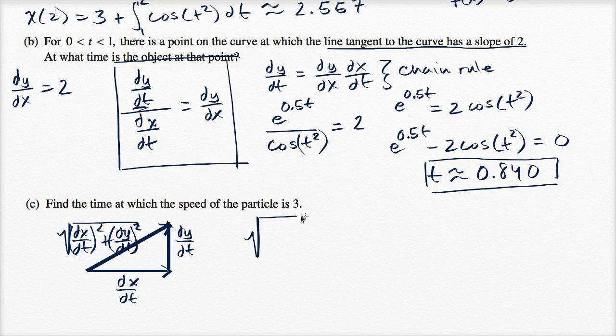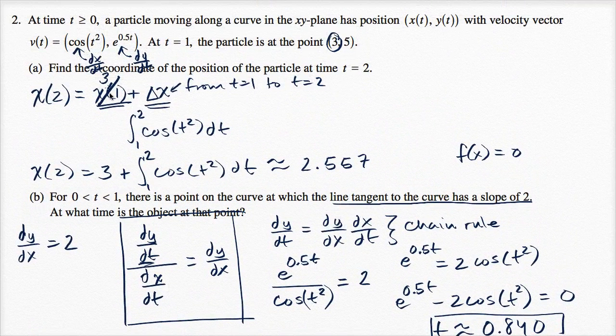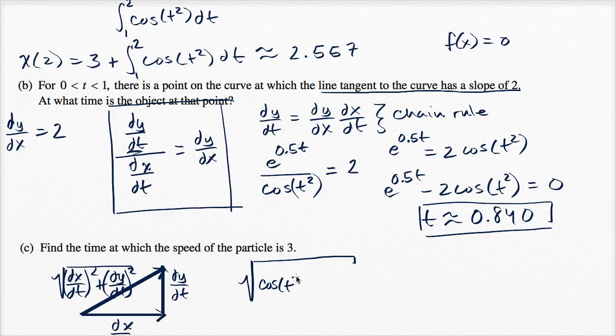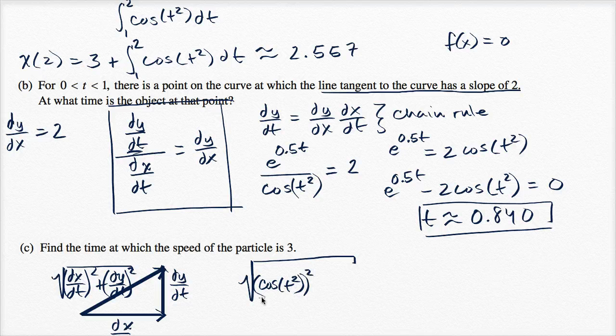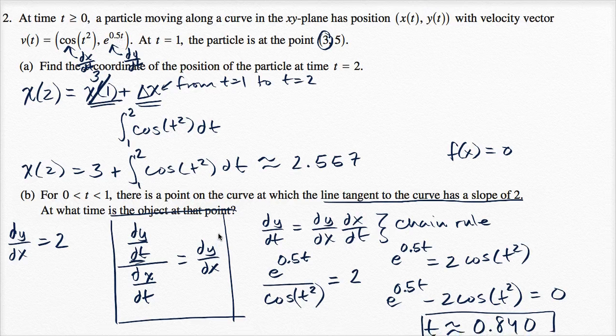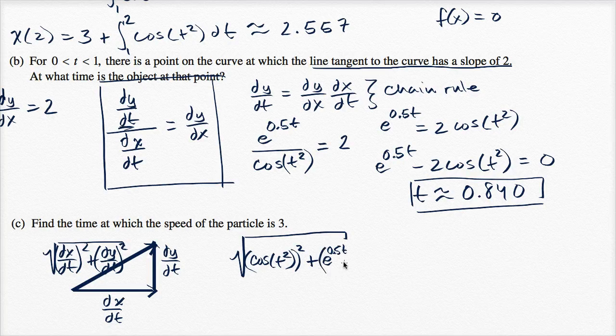So let's figure that out. So the square root of, what's the X component of our velocity? Well, they told us over here. The X component of our velocity is cosine of T squared. So cosine of T squared, and we're going to square that whole thing, and then plus the Y component of the velocity, the rate at which Y is changing with respect to time, that's E to the 0.5T, and we're going to square that. So plus E to the 0.5T, and we're going to square that. This right over here is our expression for speed as a function of time.